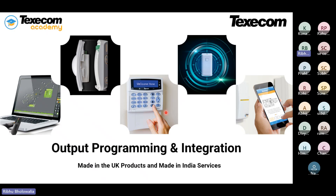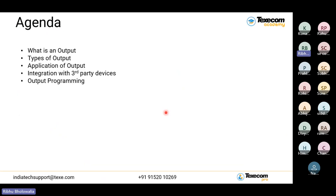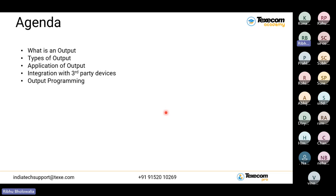Let's start with today's session. We will see what is an output and what types of outputs are available in the Texicom system. Then the application and integration part — how these outputs can be used and where we can use them. And lastly, we will see output programming through the Wintec software.